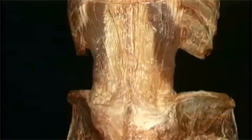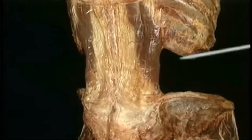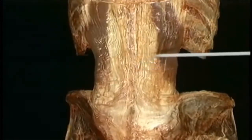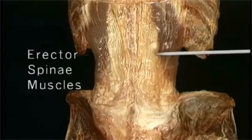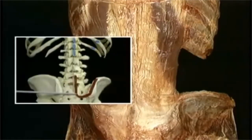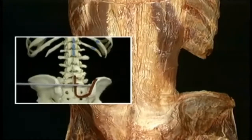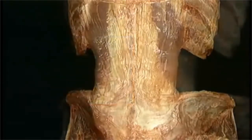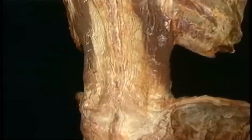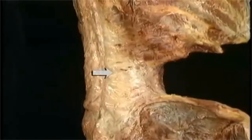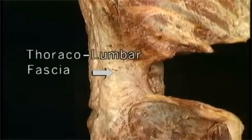We're looking from behind. Here's the iliac crest, the 12th rib, and the midline. Here are the muscles known collectively as the erector spinae. They arise from the sacrum and from this part of the iliac crest. They're inserted on the thoracic vertebrae and on the backs of the ribs. The erector spinae muscles are enclosed on the front and on the back by this envelope of tendinous tissue called the thoracolumbar fascia.